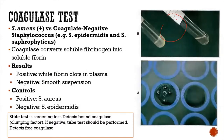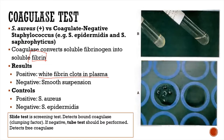The next test is the coagulase test. Once you have identified a catalase-positive organism, you perform the coagulase test to differentiate Staphylococcus aureus from coagulase-negative staph, which includes Staph epidermidis and Staph saprophyticus. The principle is that coagulase converts soluble fibrinogen into insoluble fibrin, seen as clots in plasma. A negative result would be a smooth suspension. Positive control: Staph aureus; negative control: Staph epidermidis.